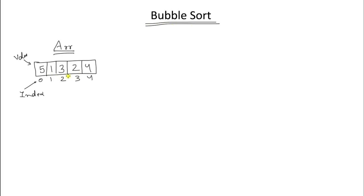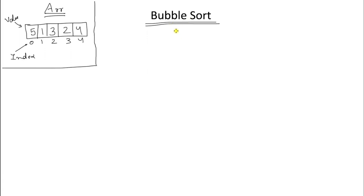Welcome to the sorting series. In this video we'll be learning about bubble sort. This is your array with values 5, 1, 3, 2, 4 and indices 0, 1, 2, 3, 4. Before learning anything you should know why you are learning it, because if you learn today and forget after two or three days it's a waste of time. The bubble sort name itself explains why this sorting technique is called bubble sort.